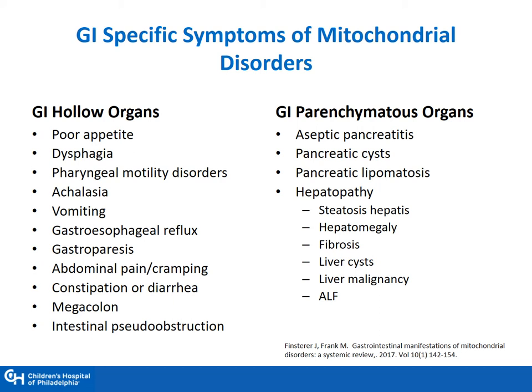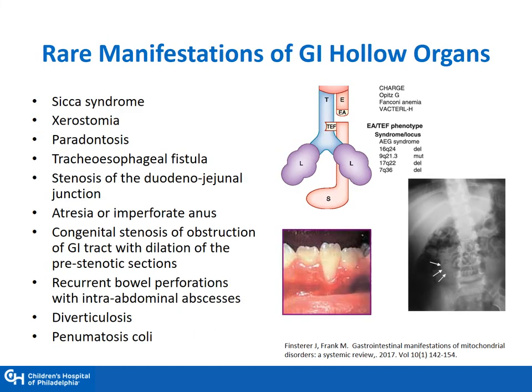Regarding hepatopathy, patients can present with various different symptoms. We usually have an increase in liver function tests without an increase in bilirubin, and it is much more common in pediatric patients than in adult patients. More rare manifestations of mitochondrial disease from a GI perspective include tracheoesophageal fistula or stenosis of the duodenal-jejunal junction or anal atresia. Patients can also present with pneumatosis coli or recurrent bowel perforations.